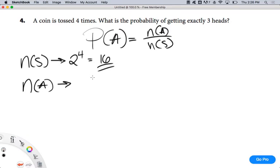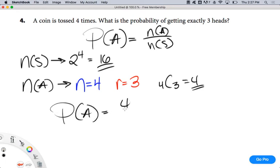So, NA, probability of getting exactly three heads. What's N? How many times am I tossing the coin? Four times. How many heads am I looking for? Three. So, it's 4C3, which is just four. So, the probability of A is four out of 16, which is 0.25. Does that make sense?